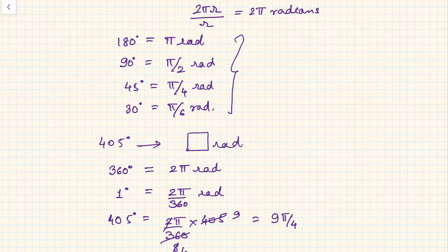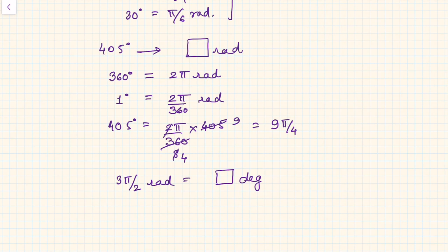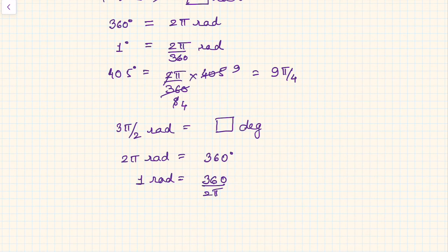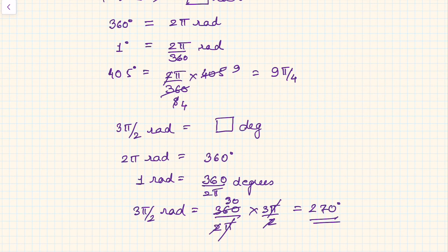Now let us convert 3π/2 radians into degrees. We know that 2π radians equals 360 degrees, so one radian equals 360/(2π) degrees. Therefore, 3π/2 radians equals (360/2π) × (3π/2). The π cancels and the 2s give 4, so the result is 90 × 3 = 270 degrees. This is how angles given in degrees can be converted into radians, and angles given in radians can be converted back into degrees.